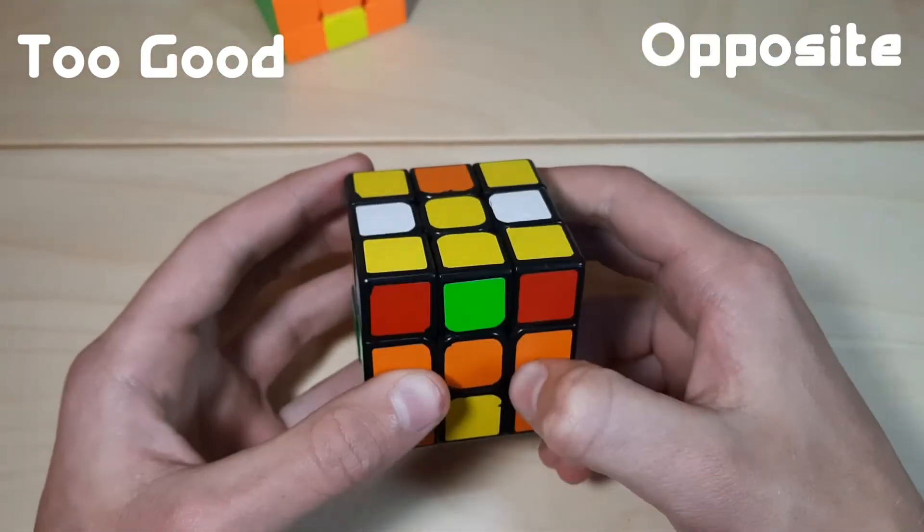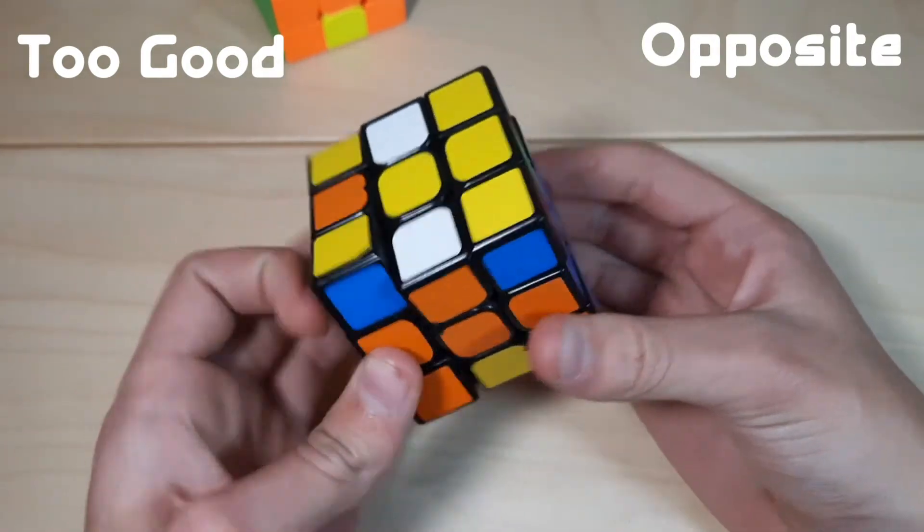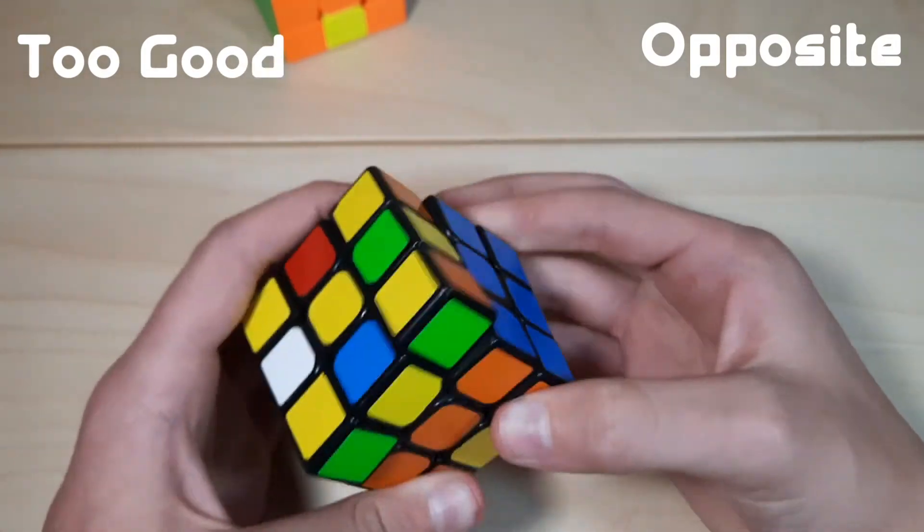For the other one, exact same thing. They're opposite on the M slice. One here, one here, and we're just going to do that insert, which will give us a mediocre, but sadly, that's the best we can do with this one.